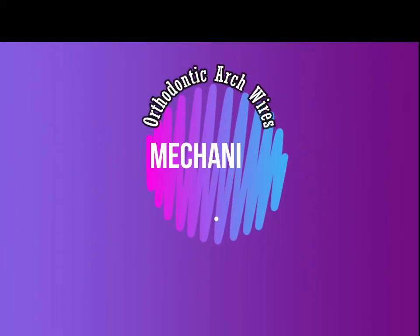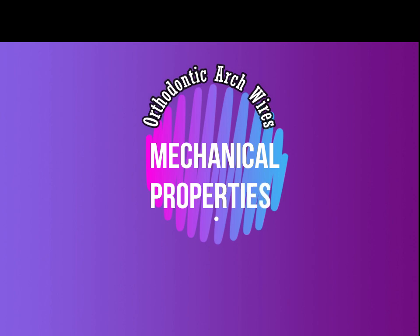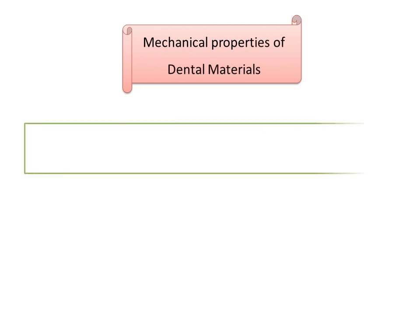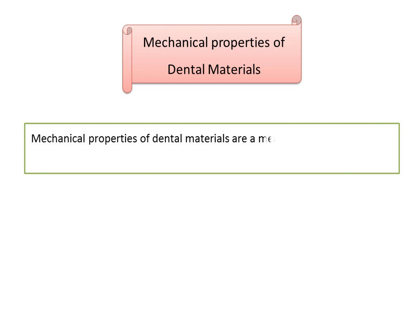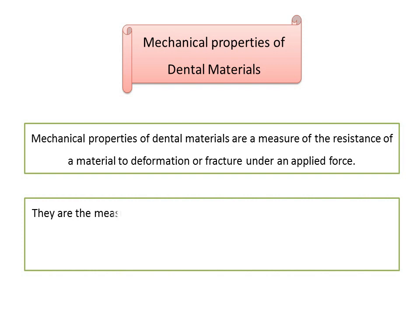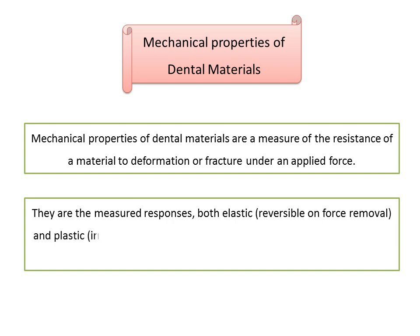We will discuss the mechanical properties of dental materials, primarily focusing on the mechanical properties of orthodontic arch wires. Mechanical properties are defined by the laws of mechanics — the physical science dealing with energy and forces and their effects on bodies. They are a measure of the resistance of a material to deformation or fracture under an applied force, encompassing both elastic (reversible) and plastic (irreversible) responses.